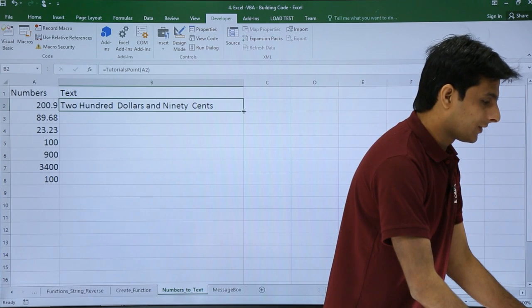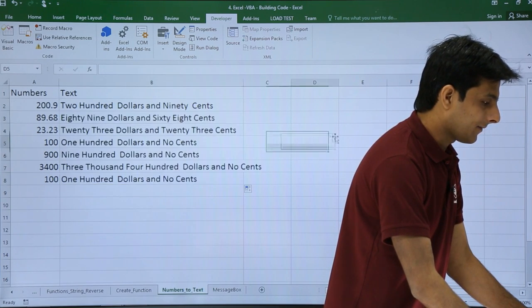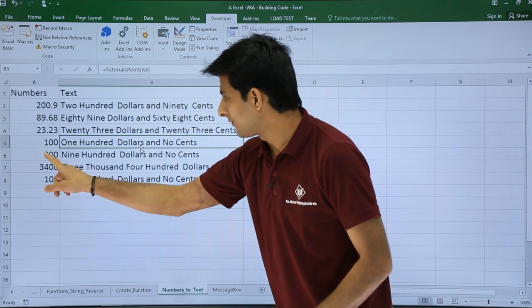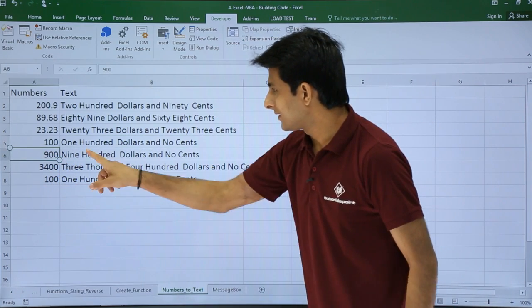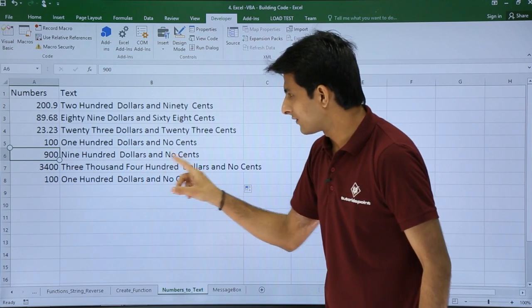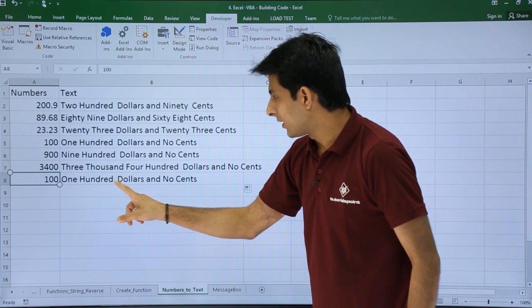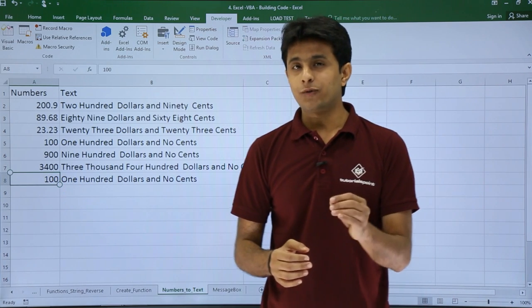Now if you carefully observe, 900 says Nine Hundred Dollars and No Cents. Here it says One Hundred Dollars and No Cents.